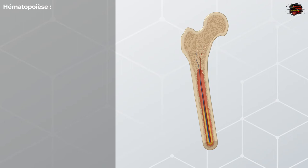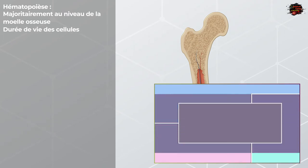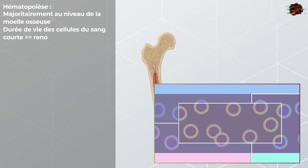Bonjour à tous et bienvenue dans ce cours de scandium consacré à l'hématopoïèse. L'hématopoïèse est un processus qui s'effectue en majorité au niveau de la moelle osseuse. Et vu la durée de vie des cellules sanguines qui est relativement courte, on aura besoin d'un renouvellement continu.